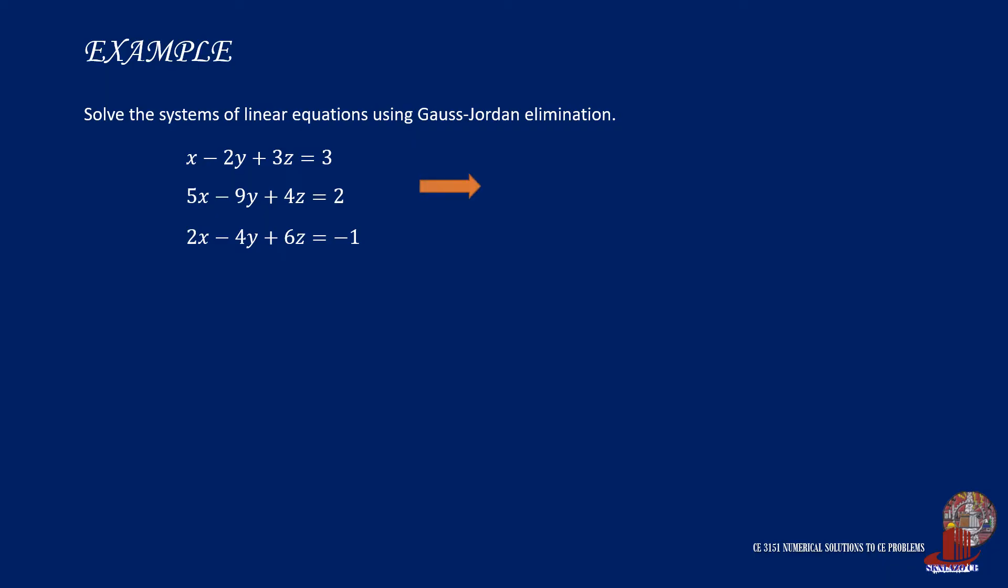First, we transform the equations into an augmented matrix. There will be 3 rows for the 3 equations and 4 columns for x's, y's, z's, and constants. We can continue similarly like Gaussian elimination.